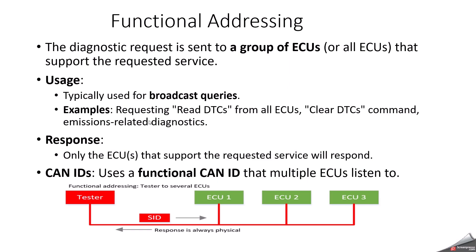What is Functional Addressing? Functional addressing is where the tester sends a communication to everybody — that means to a group of ECUs which support the requested service. It is typically used for broadcast queries. For example, requesting to read DTC from all ECUs, or you want to clear the DTC, or perform flashing in all ECUs. In all those cases, functional addressing will be used. Only the ECUs that support the requested service will respond, and a shared functional CAN ID is used that multiple ECUs listen to.